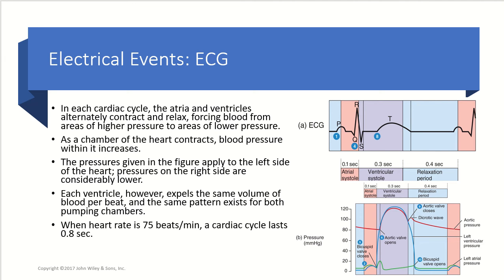In each cardiac cycle, both the atria and the ventricles are alternately going to contract and relax, or undergo systole and diastole. This is going to force blood from areas of high pressure to areas of low pressure — a recurring theme throughout anatomy and physiology. Things want to go from high pressure to low pressure, or high concentration to low concentration, because it requires a lot less energy.